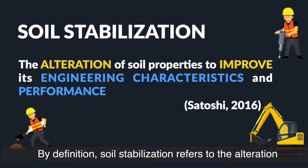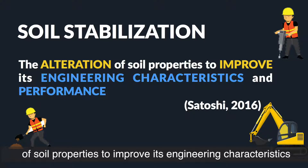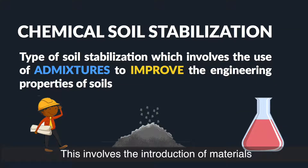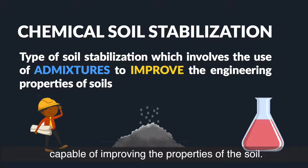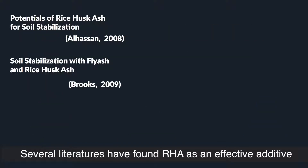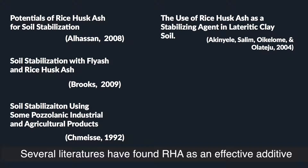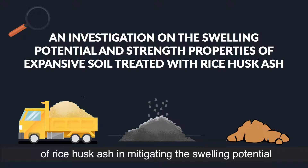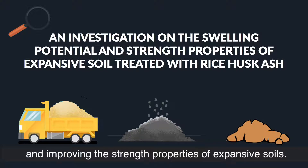By definition, soil stabilization refers to the alteration of soil properties to improve its engineering characteristics and performance. One form of this is through chemical stabilization, which involves the introduction of materials capable of improving the properties of the soil. Several studies have found rice husk ash, or RHA, as an effective additive in improving various soil properties. This study seeks to investigate the effectiveness of rice husk ash in mitigating the swelling potential and improving the strength properties of expansive soils.